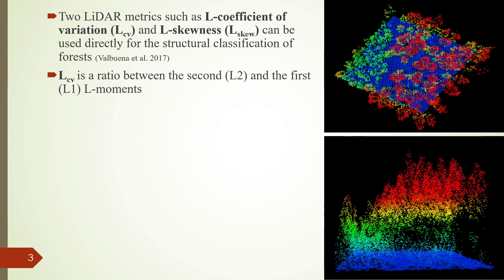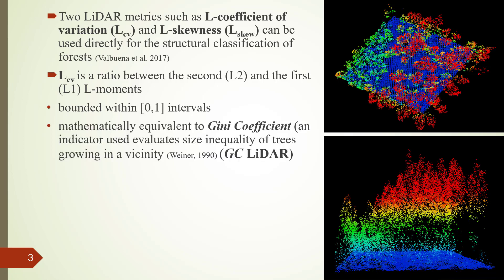LCV is actually a ratio between the second and first L-moments. L-moments are similar to the conventional moments like mean, variance, skewness, and kurtosis, but they are robust at smaller sample sizes and they have fixed intervals. For example, the LCV varies from 0 to 1.